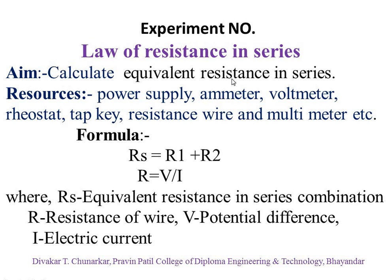In this experiment, we have to use different types of instruments or apparatus: power supply, ammeter, voltmeter, rheostat, tap key, resistance wire, and multimeter, etc. In this experiment, we have to use the formula: Rs equal to R1 plus R2, and R equal to V upon I.